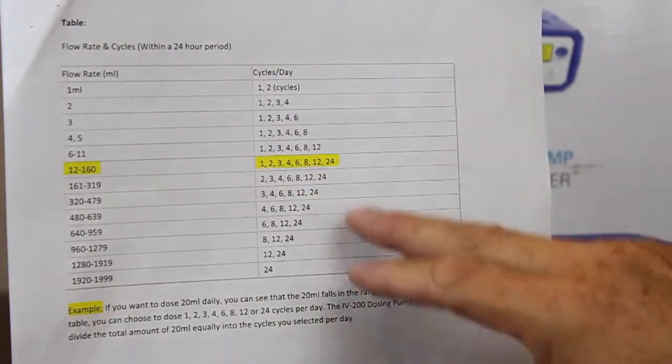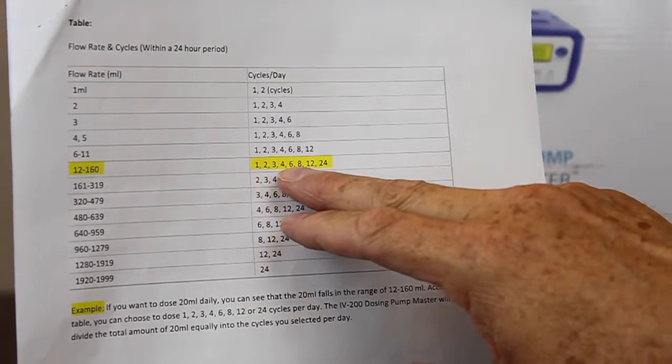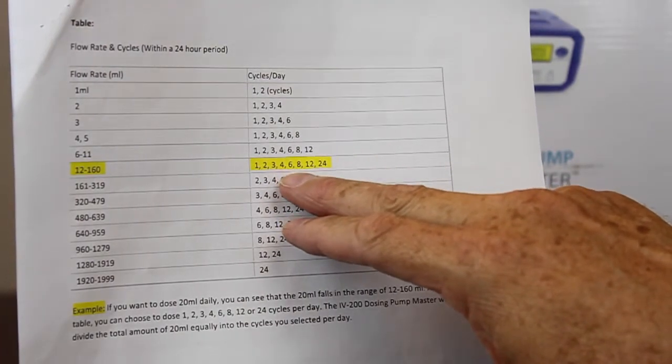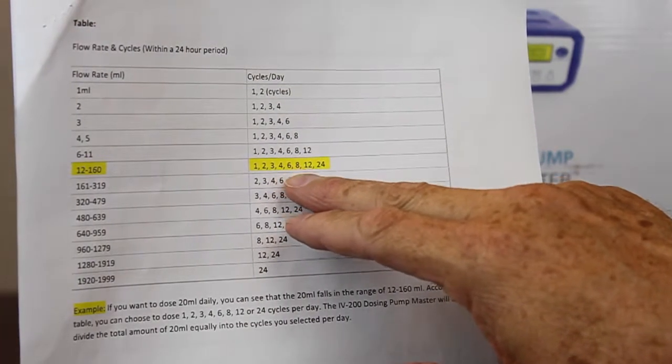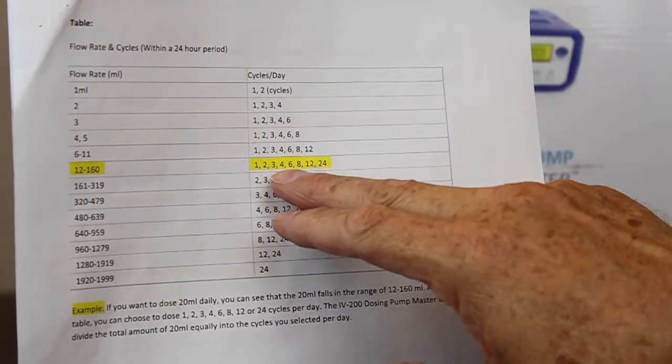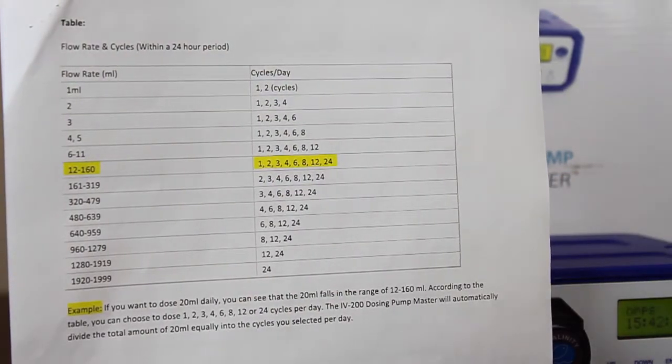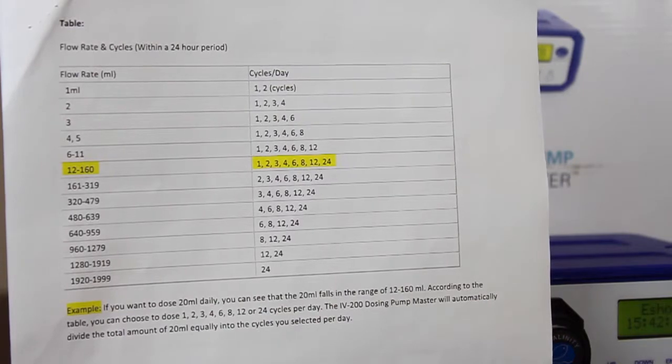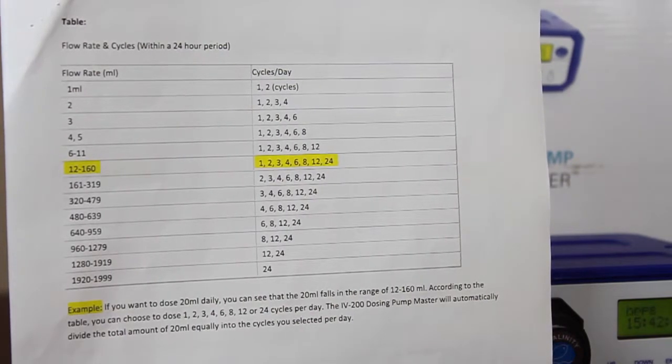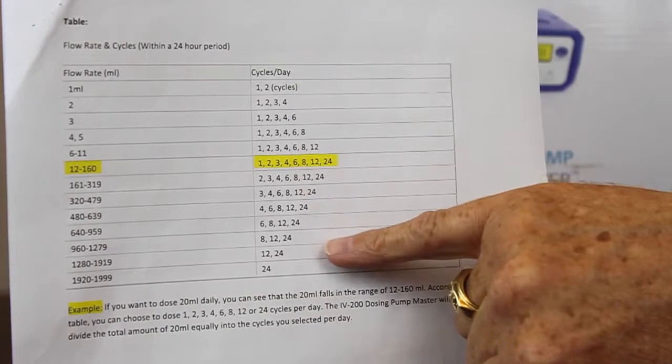The way you look at it is when it's 20 milliliters a day, it takes and divides that up. If you're going to do it, say, six times at 20 milliliters a day, it's going to do a little bit over three milliliters each dosing so it doesn't all come out at once. And it's not 20 milliliters per dosing time—it's 20 milliliters divided by the number of cycles that you run in a day.